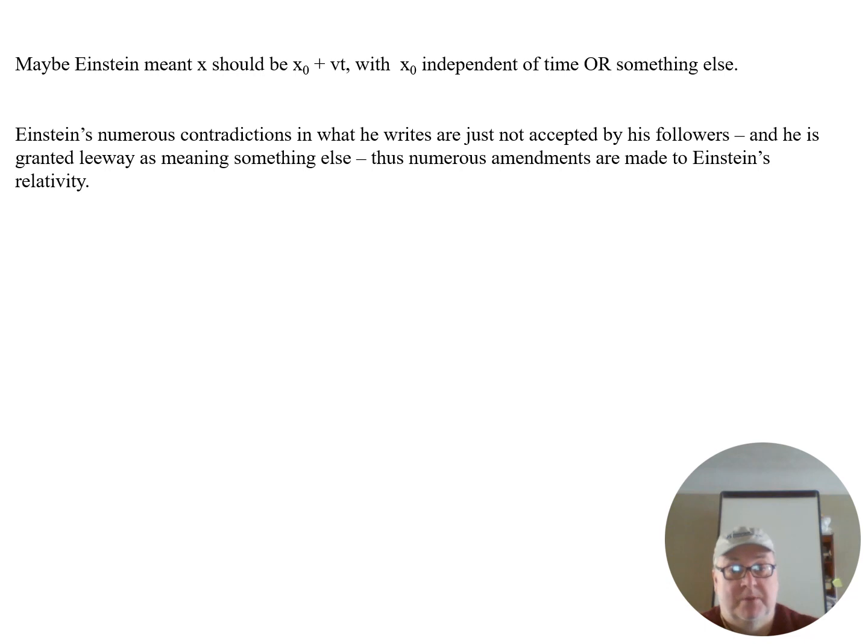Einstein makes numerous contradictions from what he writes, and they're just accepted by his followers and he is granted leeway as meaning something else whenever he has a contradiction. Thus numerous amendments are made to Einstein's relativity.